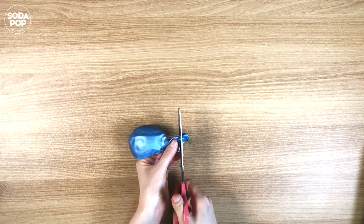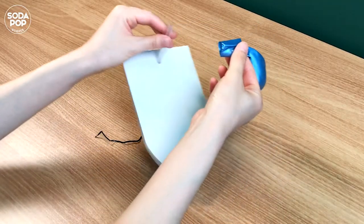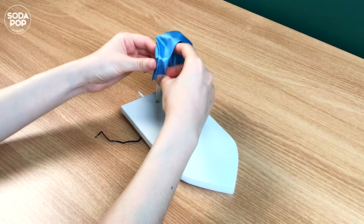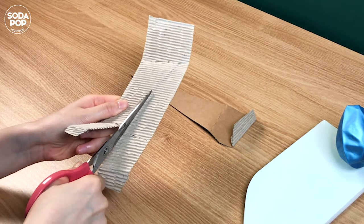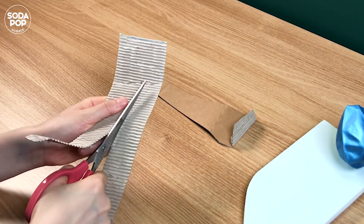Slide the short end of the straw into the balloon. Wrap it around with tape or rubber band.